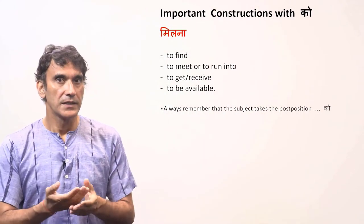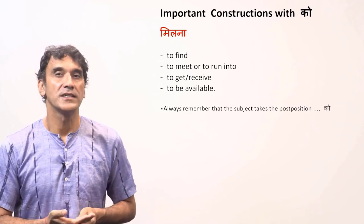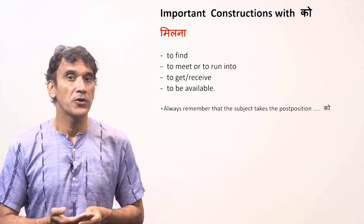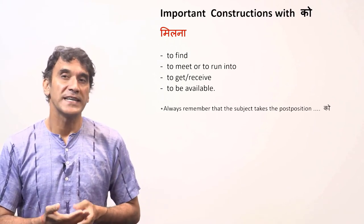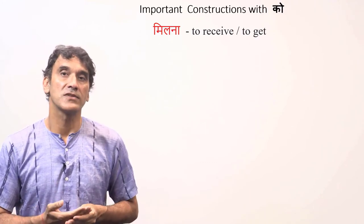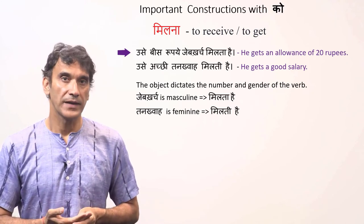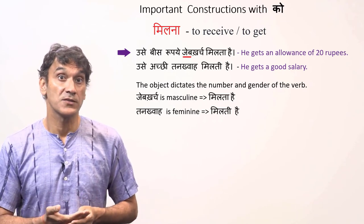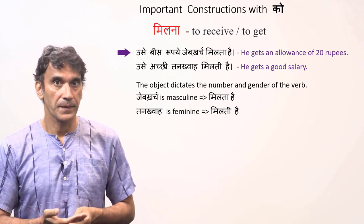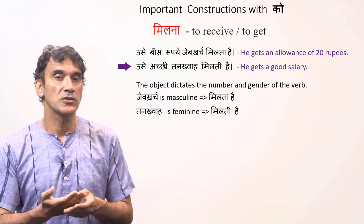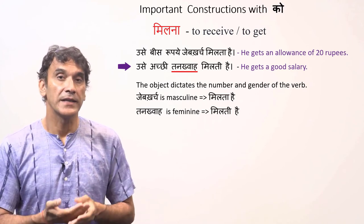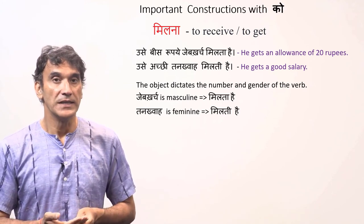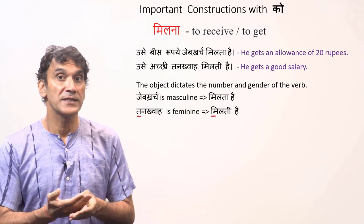Let's now take the verb milna. The verb milna has a range of meanings: to find, to meet, to run into, to get, to receive. The logical subject takes the postposition ko and the verb agrees with the grammatical subject, or object in some cases. Milna with the meaning of to receive or to get: Usseh bees rupee jeep kharch milta hai — He gets an allowance of 20 rupees. The subject goes with the postposition ko — usseh, usko — and the grammatical subject jeep kharch is masculine singular, so the verb form is milta hai. Next: Usseh achhi tankha milti hai — He gets a good salary. Since tankha (salary) is feminine, the verb form is milti hai. The object dictates the number and gender of the verb.